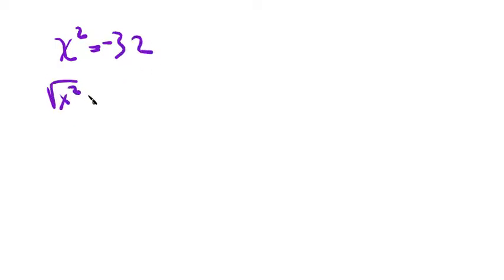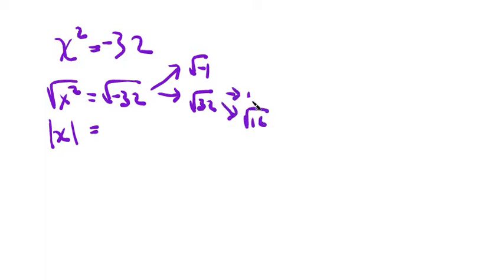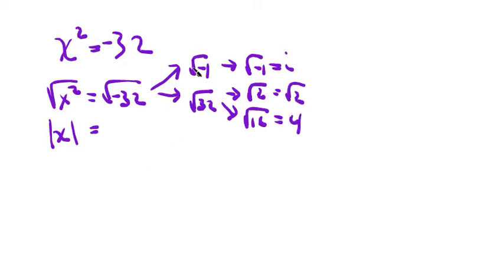We're going to take the square root of both sides — it's already isolated for us. On the left we get the absolute value of x. On the right we have the square root of negative 32. We can break that up into the square root of negative 1 and the square root of 32. We can break 32 up further because 32 is divisible by the perfect square 16. Carrying the square root of negative 1 over: that equals i, then we have root 2 and 4. So as a quick check: 16 times 2 times negative 1 equals negative 32. This is equal to i, this you can't simplify further, and this is 4.